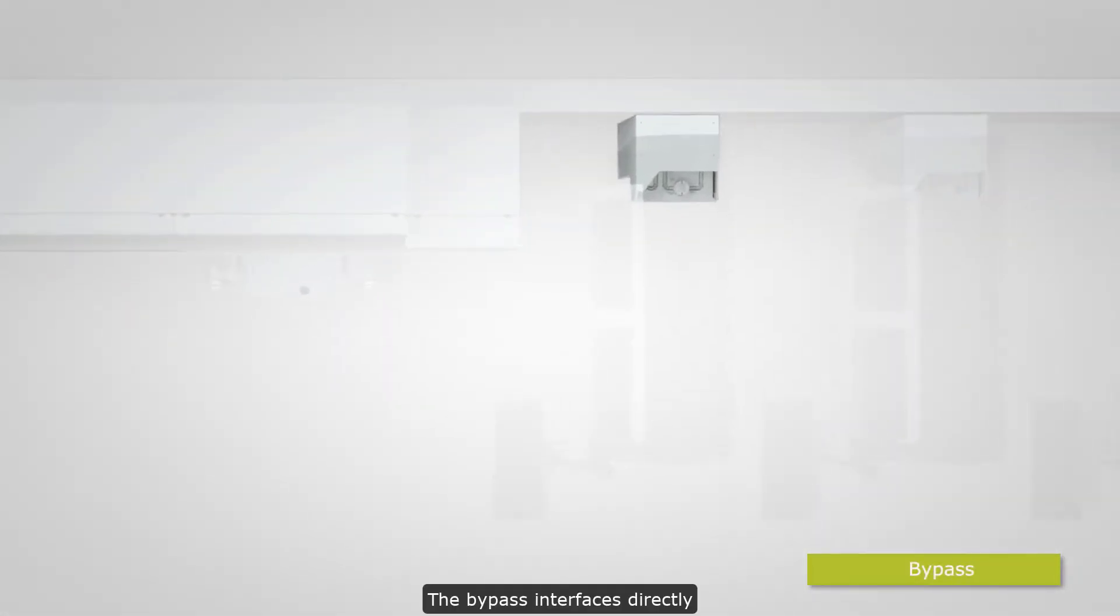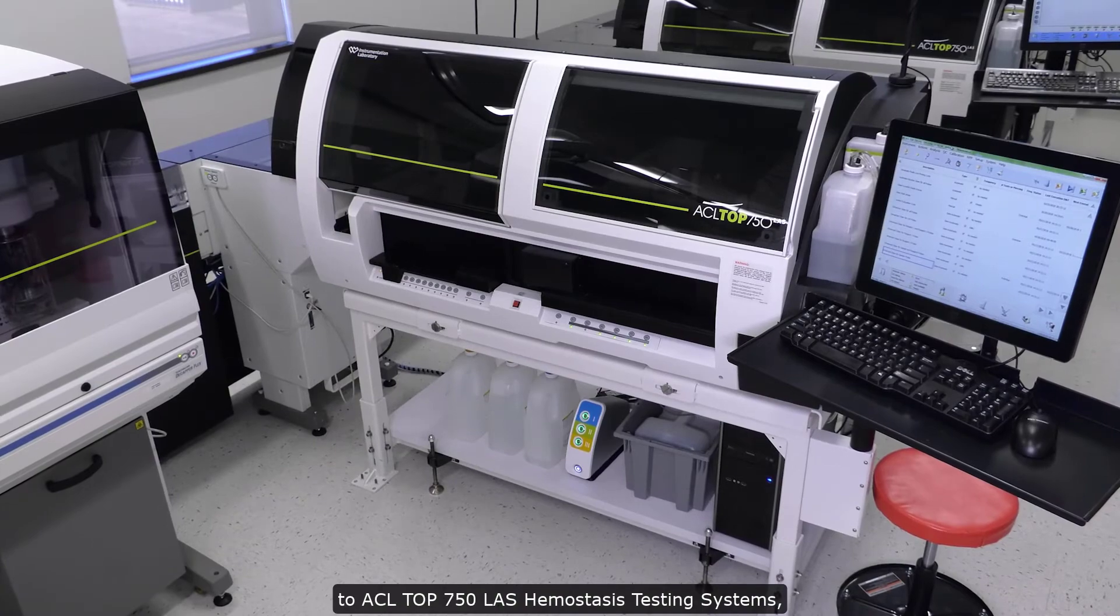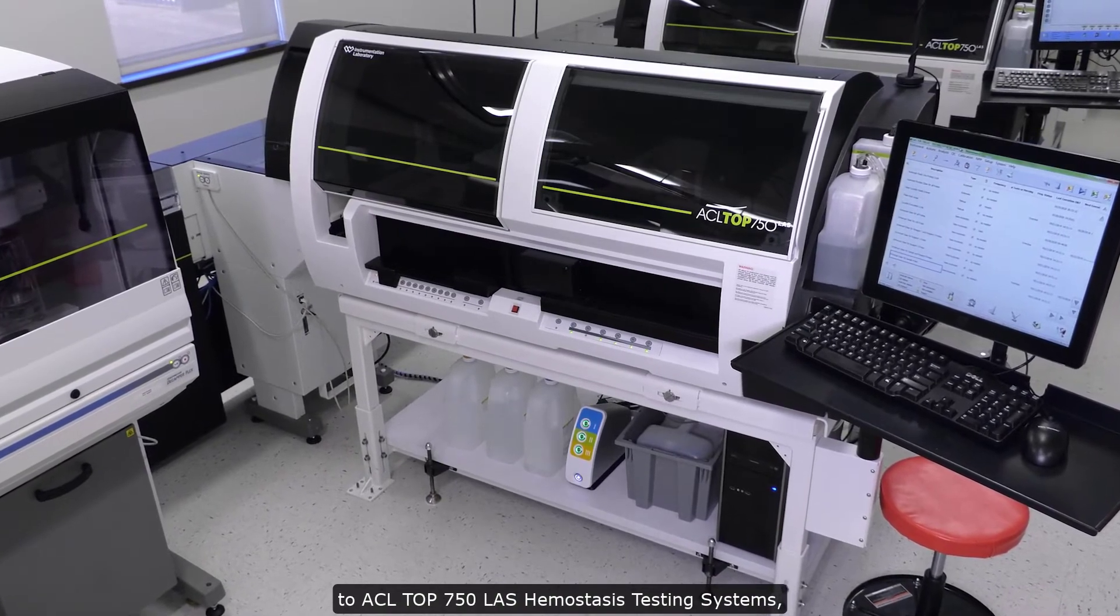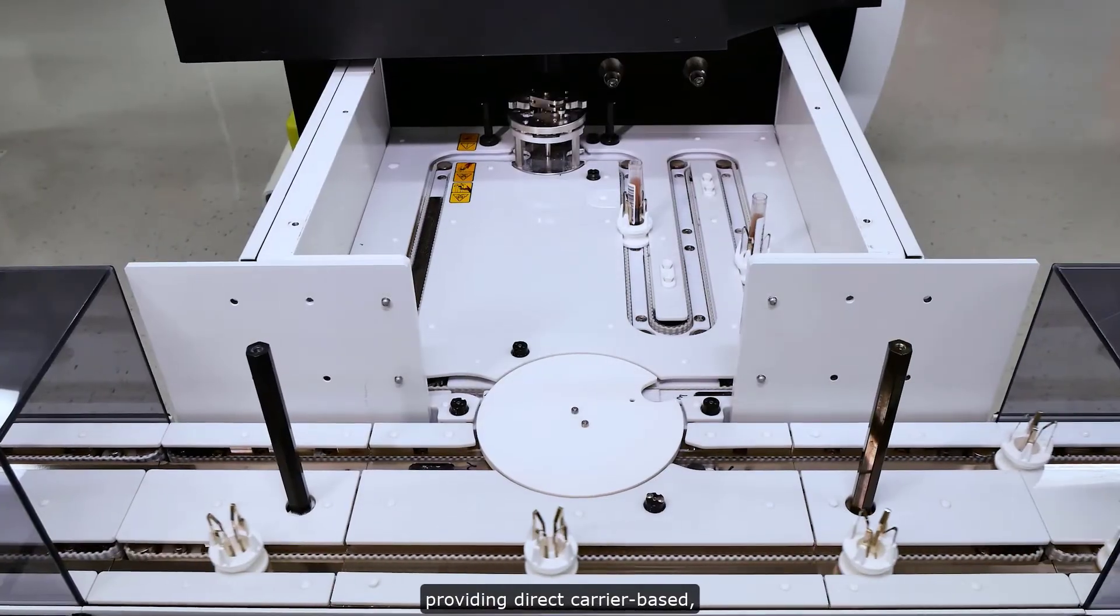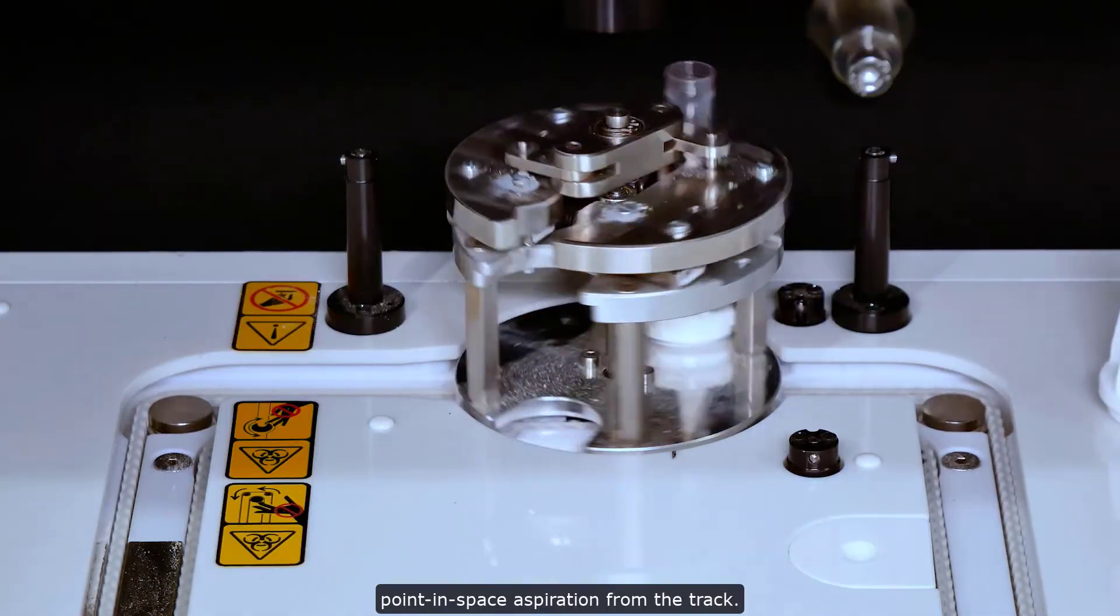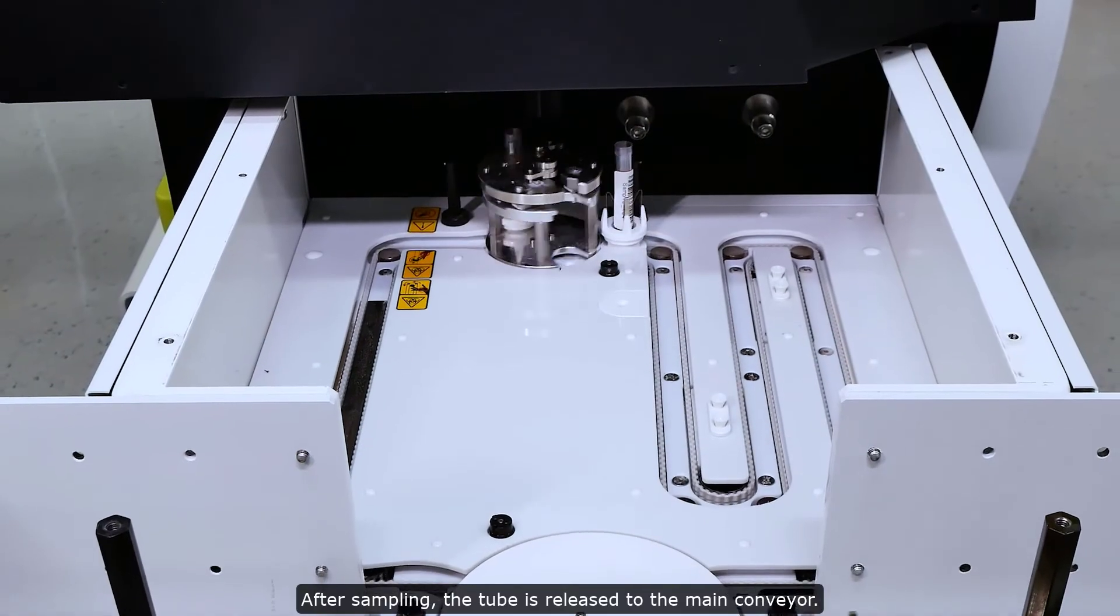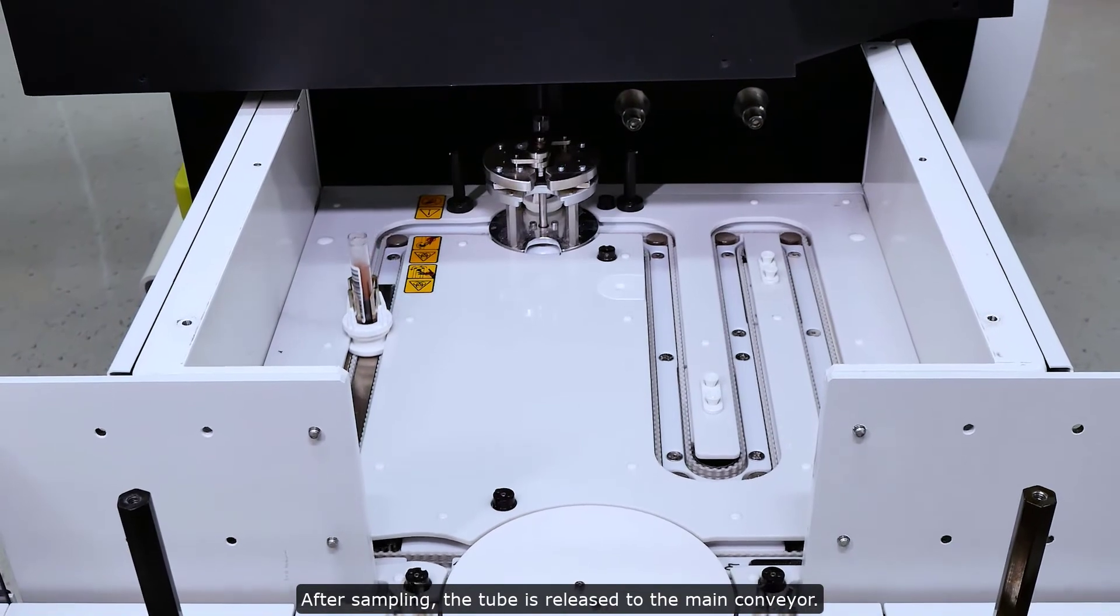The bypass interfaces directly to ACL Top 750 LAS hemostasis testing systems, providing direct carrier-based, point-in-space aspiration from the track. After sampling, the tube is released to the main conveyor.